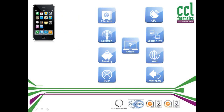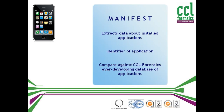So where is the evidence on this phone? The answer is that we don't know where it is until we know what it can do. Manifest from CCL Forensics is a tool which forensically analyses the installed applications and extracts data about them, including a unique identifier for the app.